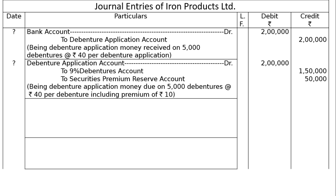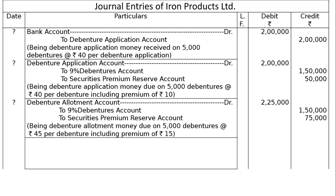Third entry is the due entry for allotment: Debenture Allotment Account debited to 9% Debentures Account and to Securities Premium Reserve Account. Being debenture allotment money due on 5,000 debentures at the rate of Rs.45 per debenture, including Rs.15 as Securities Premium Reserve. Debit column: Rs.2,25,000; credit column: Rs.1,50,000 and Rs.75,000.